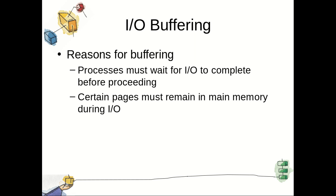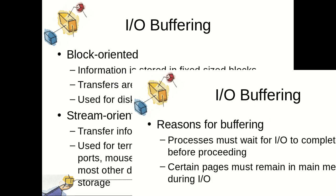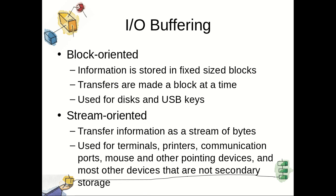Buffering is done for the following different reasons: first one is speed mismatch between the CPU and IO devices; next one is devices have different data transfer sizes; another one is overlapping of input and output processing; and it increases the efficiency of the operating system.